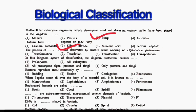Next question: the process of DASH was discovered by Griffith while working on Diplococcus Pneumoniae. Option 1: Transformation. Option 2: Translation. Option 3: Translocation. Option 4: Transportation. The correct answer is Option 1, that is Transformation.